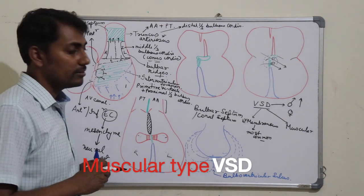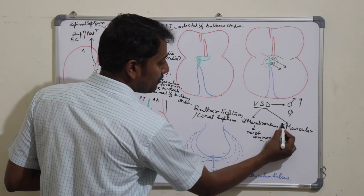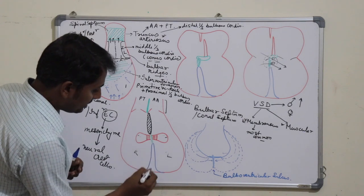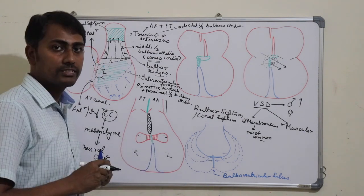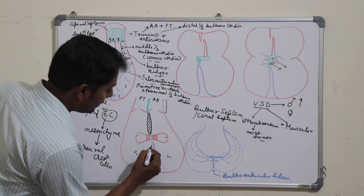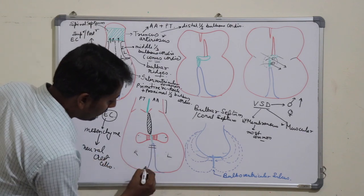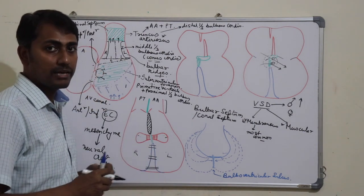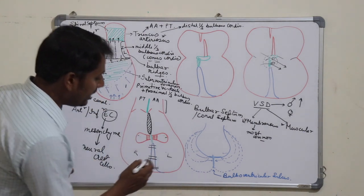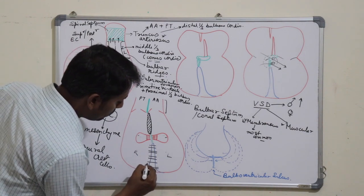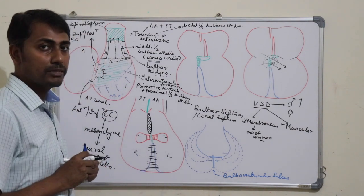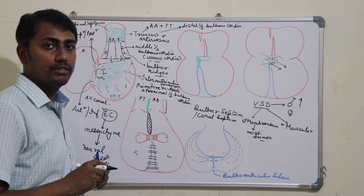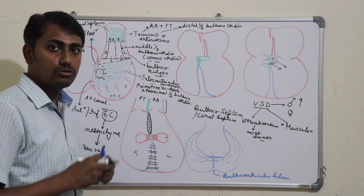The muscular type of ventricular septal defect can occur anywhere in the region of the muscular interventricular septum — it can be in the superior part, the inferior part, or the middle part. Sometimes there could be many perforations in this muscular part of the interventricular septum, and these small perforations give an appearance of Swiss cheese.